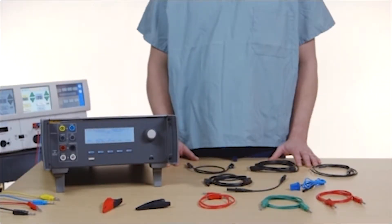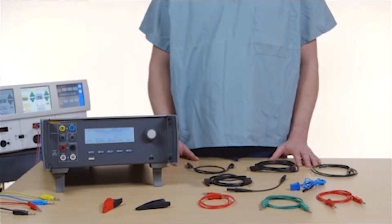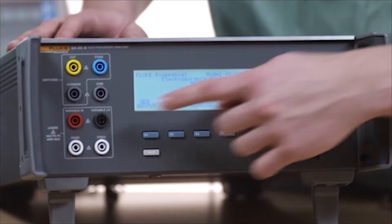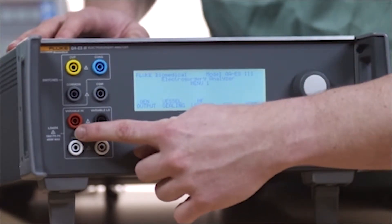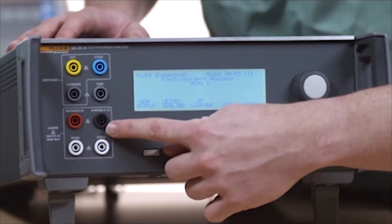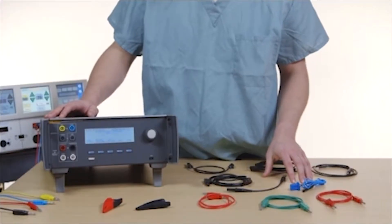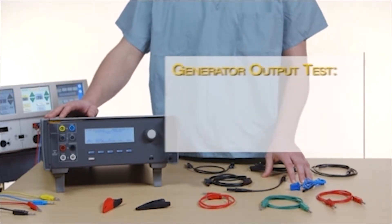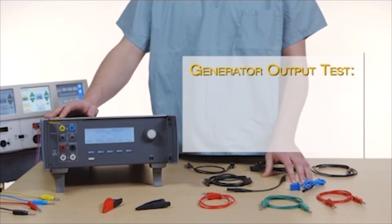During the generator output test, the QAES3 connects the variable load resistance from the variable high-active electrode to variable low-neutral electrode. The test measures the ESU output across that load and shows the measured generator output,